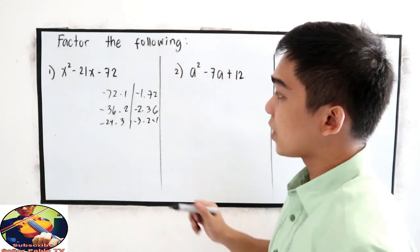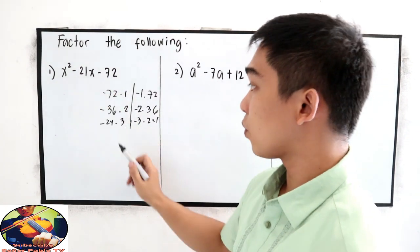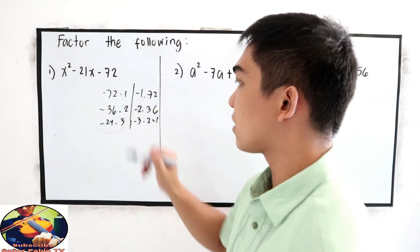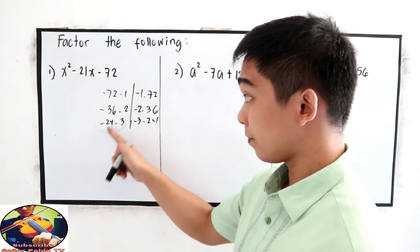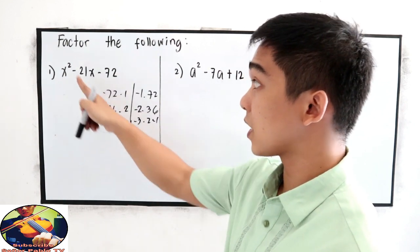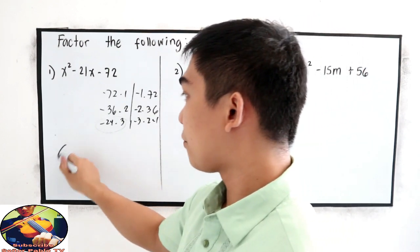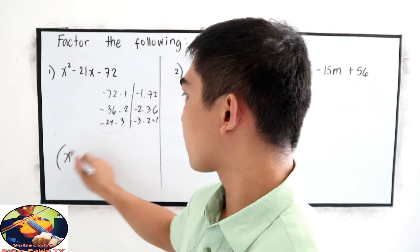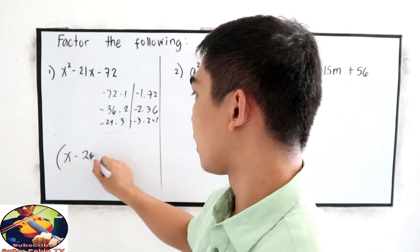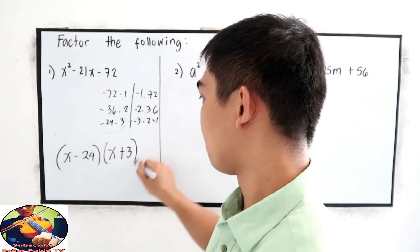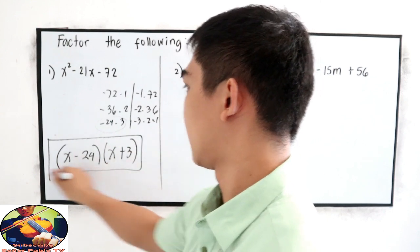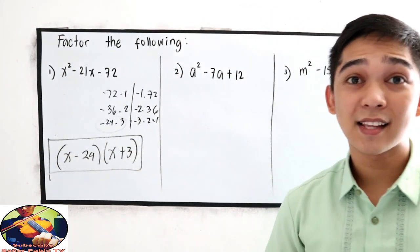Now, let us check. The sum must be negative 21. So obviously, that is negative 24 times 3 because negative 24 plus 3 is negative 21. So our factored form is x minus 24, x plus 3. That is the answer in number 1.